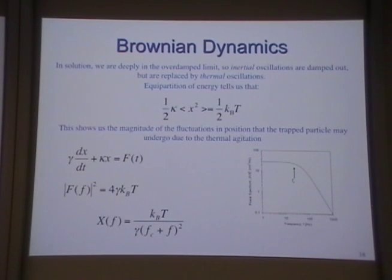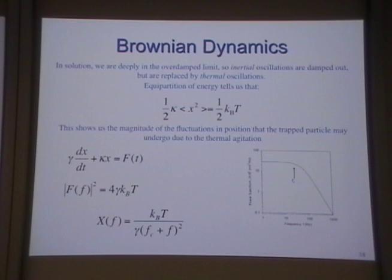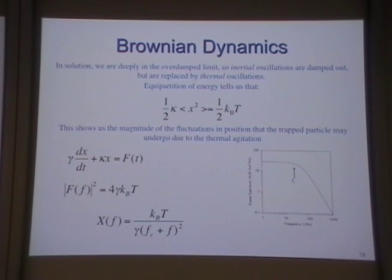Optical tweezers in air or vacuum would be underdamped — there's no damping mechanism. However, when you put them in liquid, it's overdamped. The damping is so strong it overwhelms the natural frequency. For a one-micron bead, the natural trap frequency would be something like 50 kilohertz, but if you measure the power spectrum from the position oscillations, the frequency falls off at around one kilohertz — it's highly overdamped. That's good because the damping helps localize the particle.